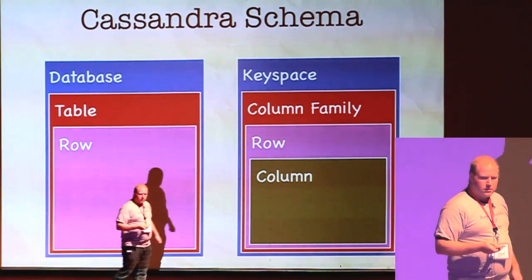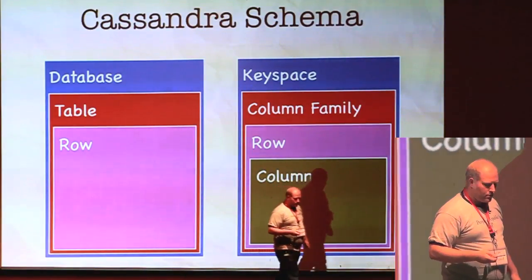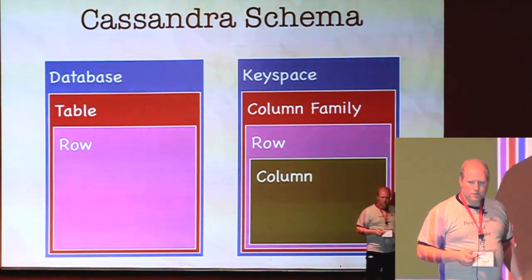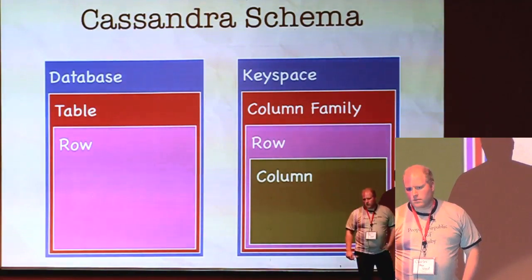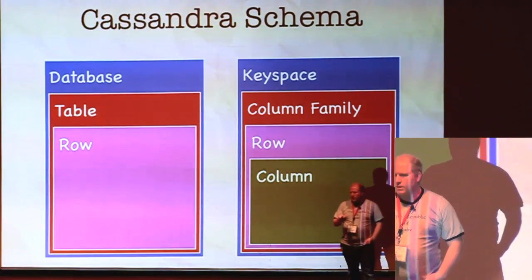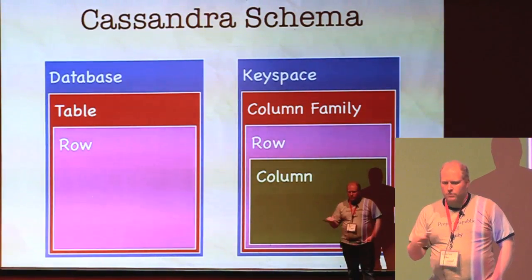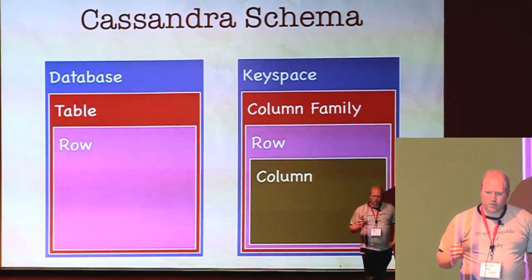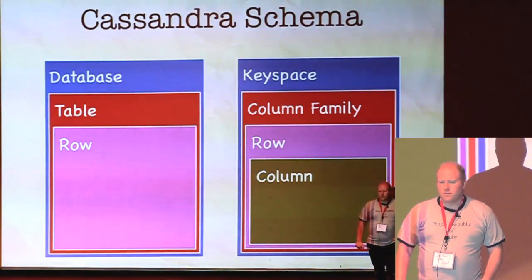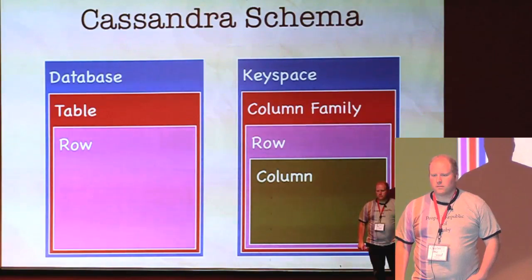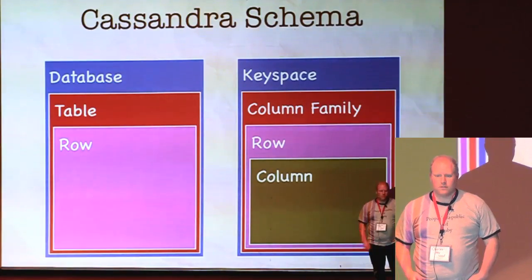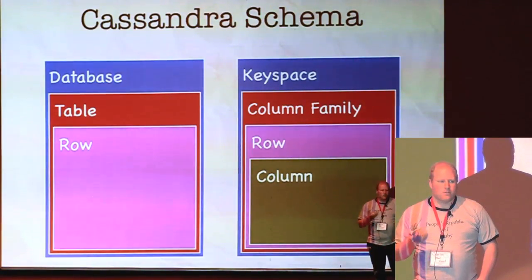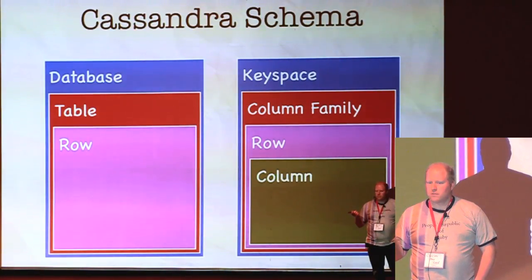If you want to check out a Cassandra and Ruby project, Goala basically released their chronologic package — that's a timeline tracker built in Ruby and Cassandra, and it's pretty awesome. It manages timelines. I always like seeing code samples like that. Are there any other questions? All right.